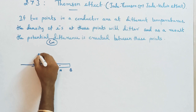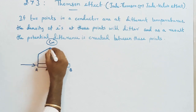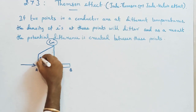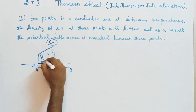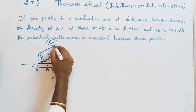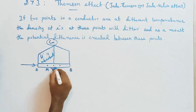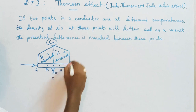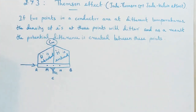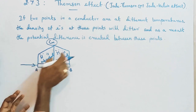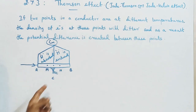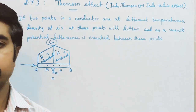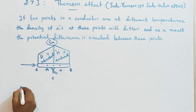From A to C, heat is absorbed. And from C to B, heat is evolved — that is, evolved and liberated. This is the behaviour of copper. This is called the Positive Thomson effect. The metals showing positive Thomson effect include copper, silver, zinc, and cadmium.